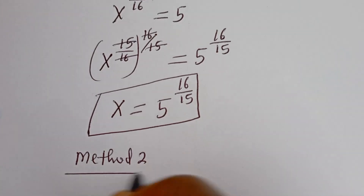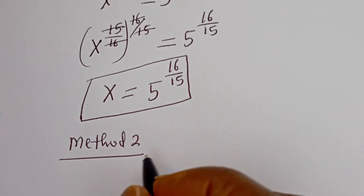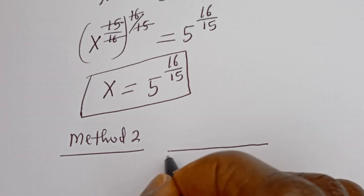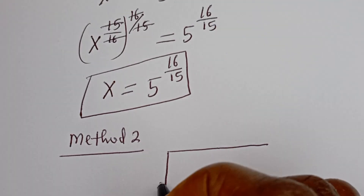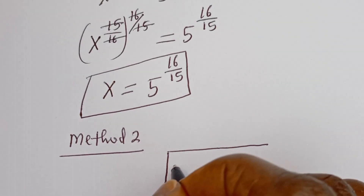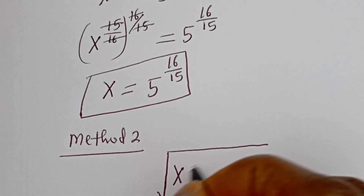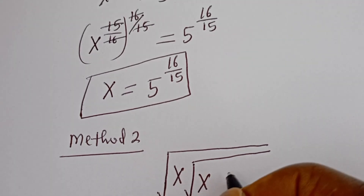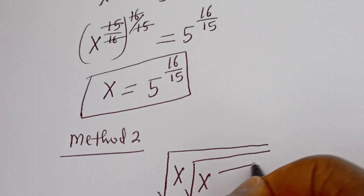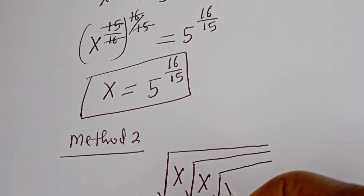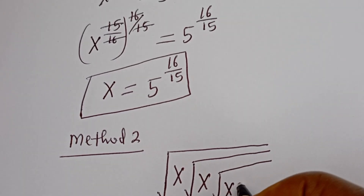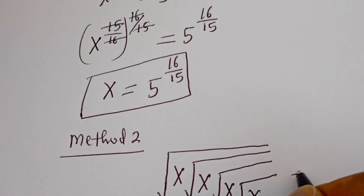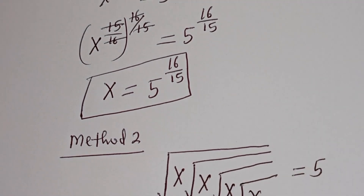Now let's consider the second method — Method 2. From the given equation we have square root of x, square root of x, square root of x, square root of x, and square root of x, equal to 5.